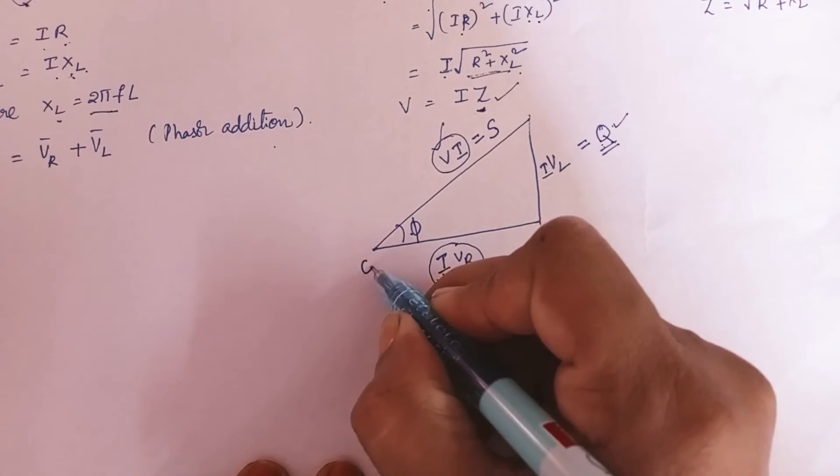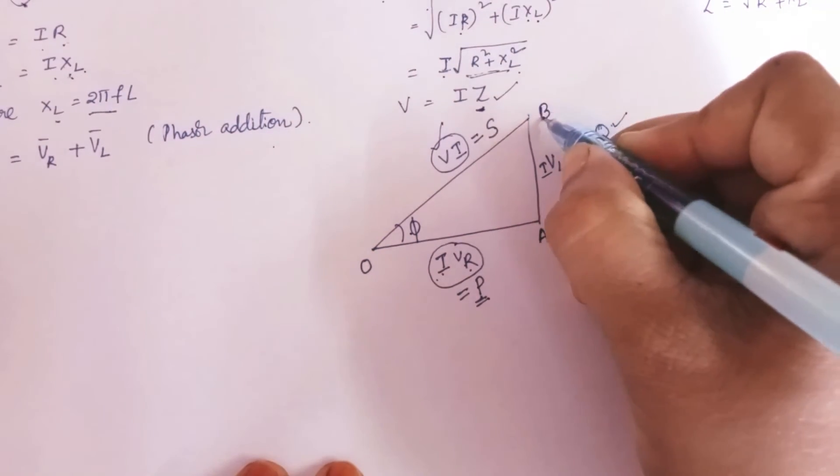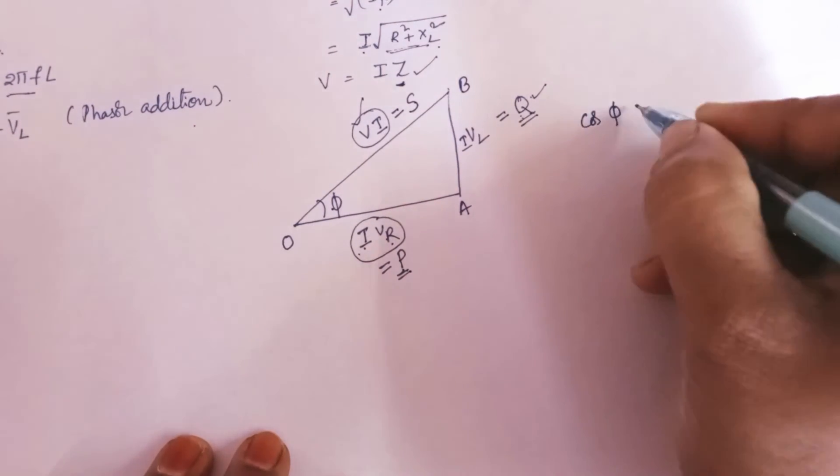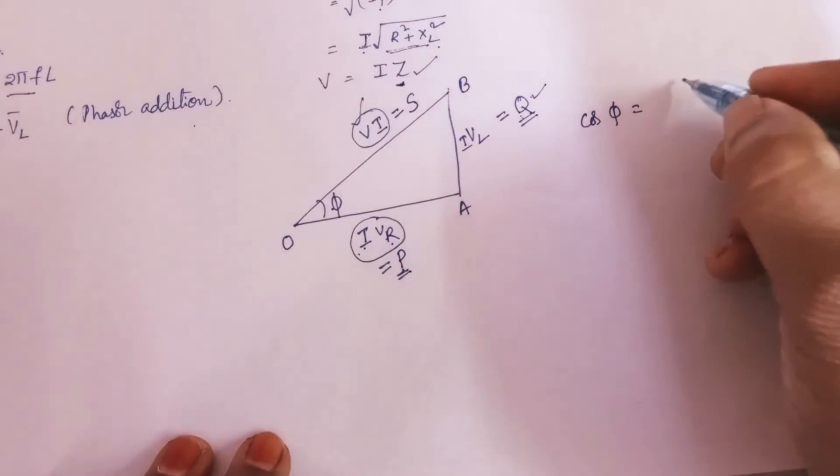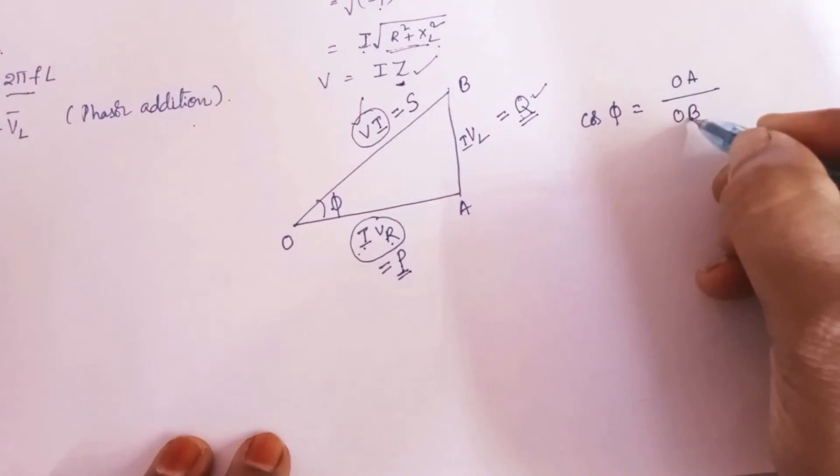Let me put the names for the points O, A, B. So from this triangle what is cos phi? Cos phi is adjacent that is OA by hypotenuse that is OB. So what is OA?